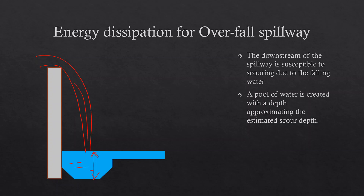Based on that, we can decide the depth of the pool required down to the calculated scour depth, and then provide additional protection at the bottom in the form of rock aprons or concrete lining.